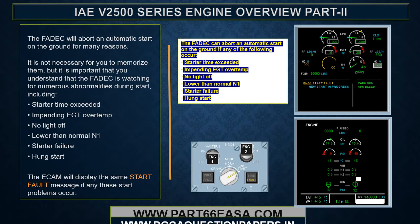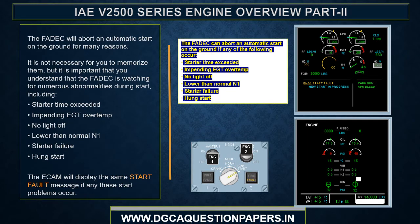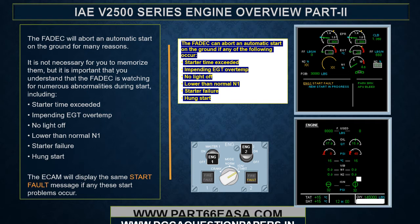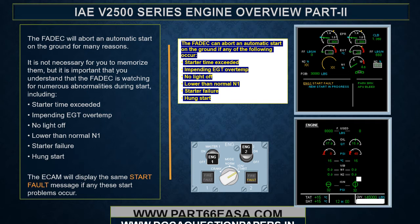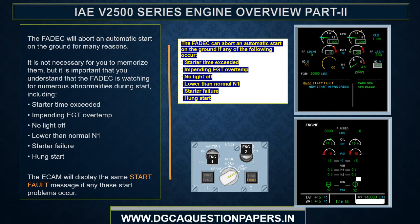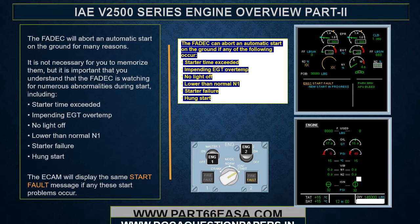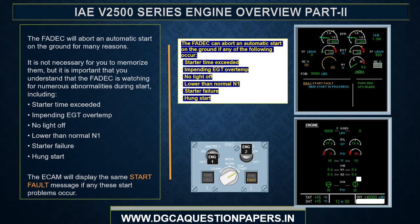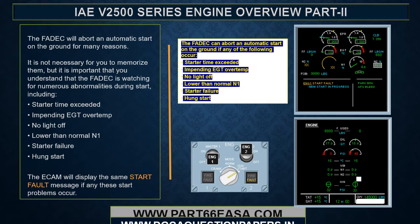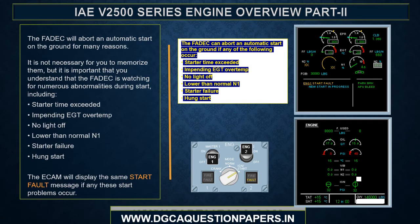The FADEC will abort an automatic start on the ground for many reasons — it is not necessary to memorize them, but the FADEC watches for numerous abnormalities during start including: start time exceeded, impending EGT overtemp, no light off, lower than normal N1, start failure, or hung start. The ECAM will display the same start fault message if any of these start problems occur.